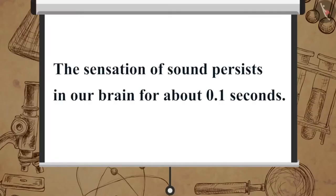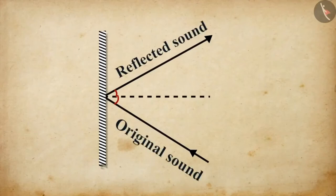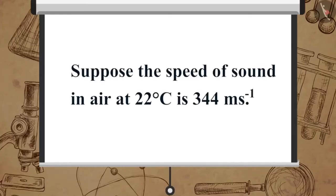The sensation of sound persists in our brain for about 0.1 seconds. To hear a distinct echo, the time interval between the original sound and the reflected sound must be at least 0.1 seconds.